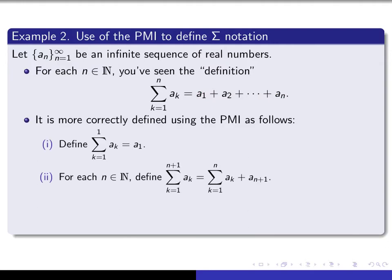The more correct way to define it for all natural numbers n is to use the principle of mathematical induction. We define the summation of a_k as k runs from 1 to 1 to be a_1. Then we define the summation from k=1 to n+1 to be the sum from 1 to n plus the very last term, a_{n+1}. This is the inductive way of defining summation notation.